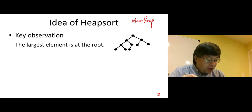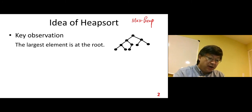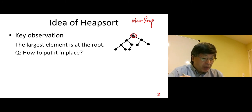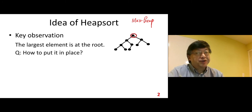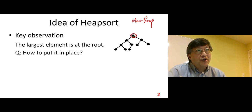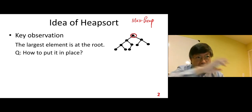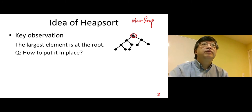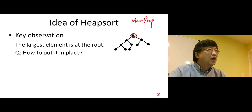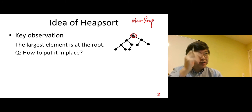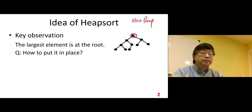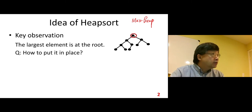For the max heap, the largest element is at the root. The question is: how to put it in place? Because sorting means we put all the elements in place — then we sort the whole array. So let's put our first element in place — the max element in place. The question is how do we do it?